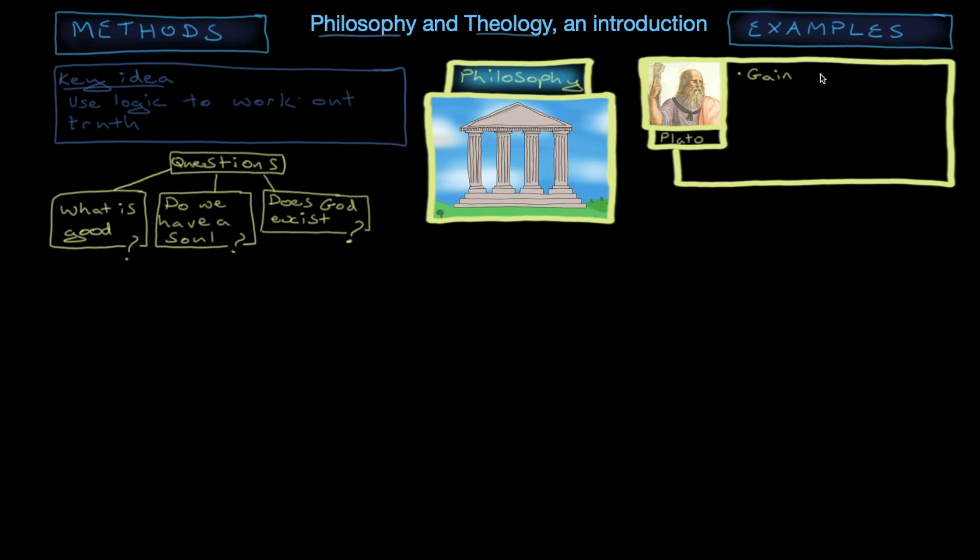So, all knowledge, he thought, was gained just by thinking. And we can understand what he kind of calls universals, these abstract concepts, just by thinking about them. He also thought that the thing that does that thinking is your immaterial soul. So, he thought that we do have a soul.